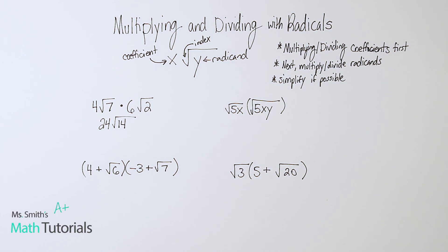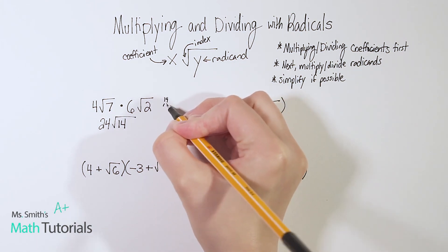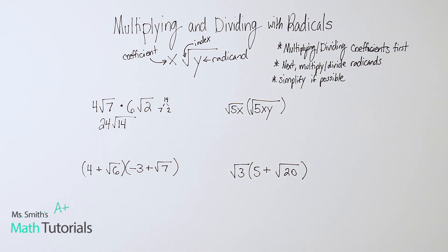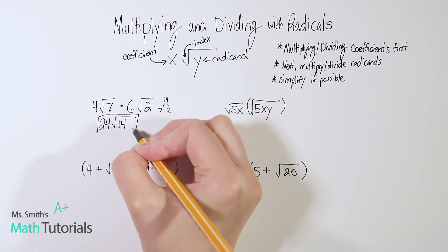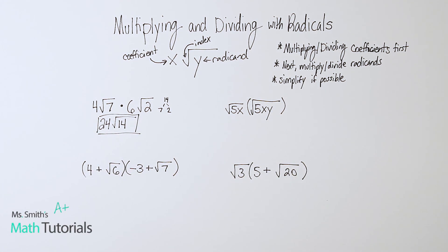Next, I would want to check to see if I can simplify if possible. Looking at 14, can I break 14 down anymore? You could try to do a factor tree of 14 and say, okay, 7 and 2 goes into 14. I can't break 7 down anymore. I can't break 2 down anymore. I don't have any pairs. 14 is as low as it goes. So 24 times the square root of 14 is my final answer there.